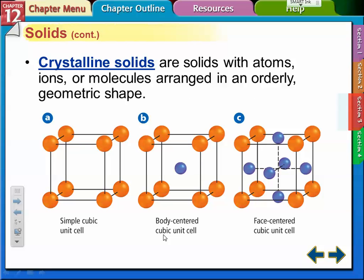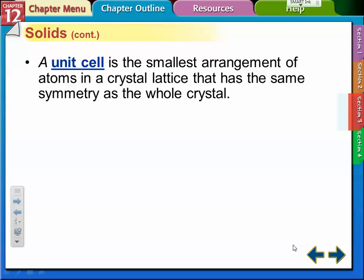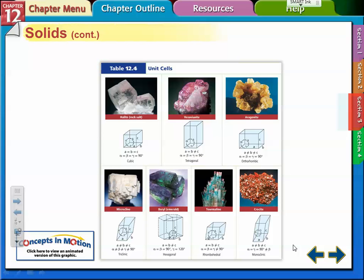Crystalline solids are solids with atoms or ions or molecules arranged in orderly geometric shape. So they have these three different ones here from the simple cubic cell, a cell with something inside of it, and then a face centered cubic, one of the more complex ones. The unit cell is the smallest arrangement of atoms in a crystal lattice that has the same symmetry as the whole crystal. So this is what one little unit equals. If we took that unit, it would have the same structure as the whole big crystal. And these are some examples of different kinds of crystals and rocks.